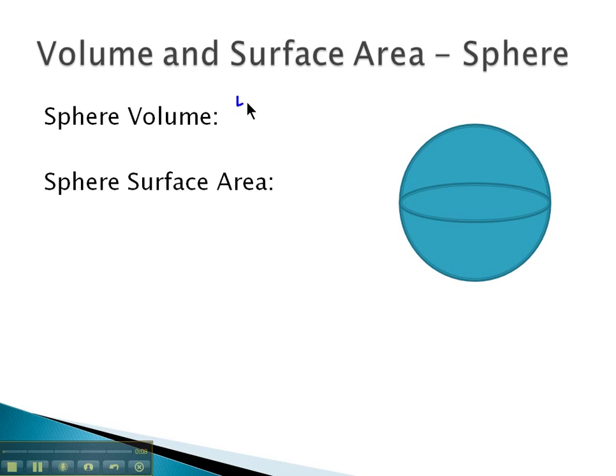To find the volume of a sphere, we'll use the formula 4 thirds times pi times the radius cubed. This means we need to know the distance from the center to the outside of the circle. If we want the surface area, or the formula to cover the ball, we have 4 pi times the radius squared.